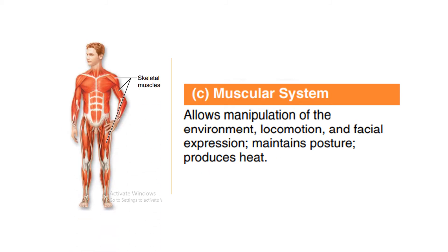The next system is the muscular system. Muscles of the body have one function: to contract, meaning to shorten. When this happens, movement occurs. The mobility of the body reflects the activity of skeletal muscles — the large fleshy muscles attached to bones. When these contract, you are able to stand erect, walk, jump, grasp, throw a ball, or smile. The muscular system allows manipulation of the environment, locomotion, facial expression, maintenance of posture, and production of heat.